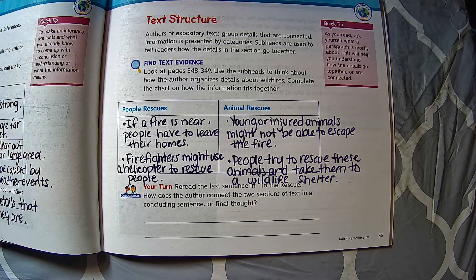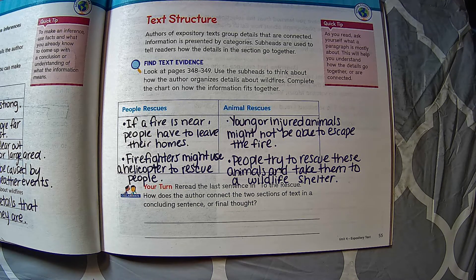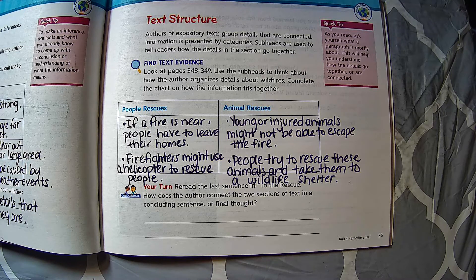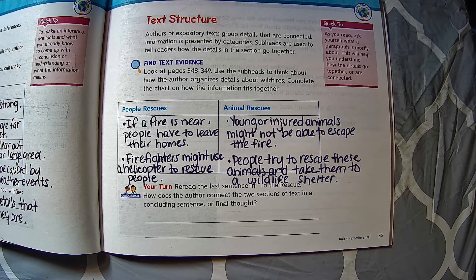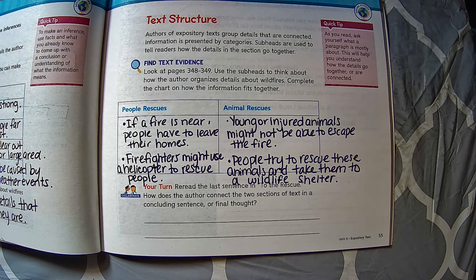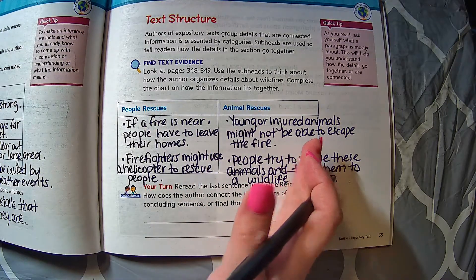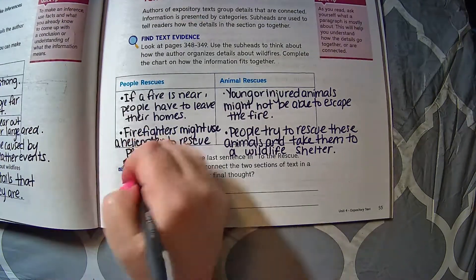So as I think about this, how does the author connect these two sections of text? We're going to write a concluding sentence or like a final thought about how these are connected. I think that the author's concluding statement or final thought is that the rescuers work together to rescue both people and animals. We're going to write that as our final thoughts.